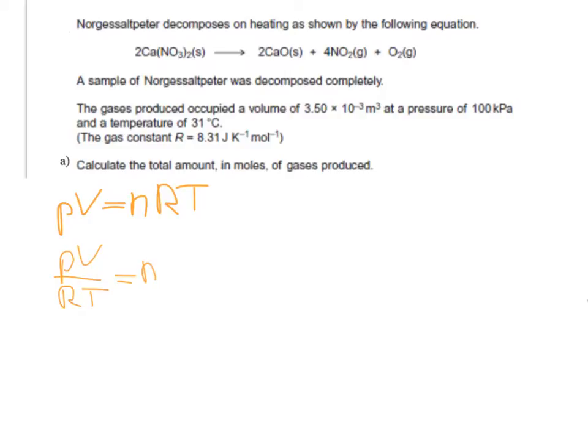Next, I should do any conversions that need converting. The volume in meters cubed doesn't need converting, but the pressure in kilopascals needs converting. To convert that to pascals, which is what I need for this equation, I have to times by 1000, so that gives 100,000 pascals. I also need to convert the temperature to Kelvin, so I add 273 to convert to Kelvin. That gives me 304 Kelvin.